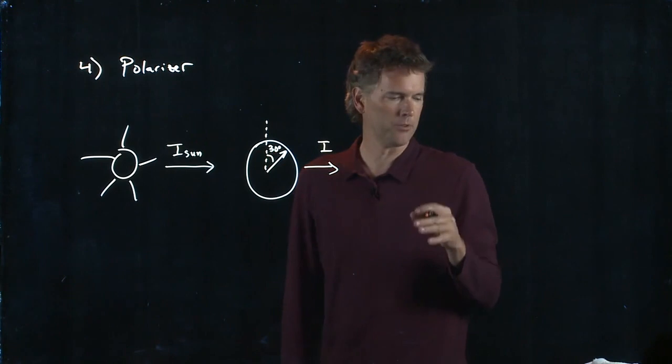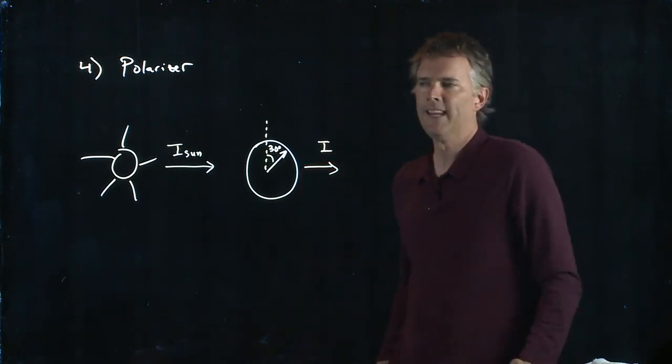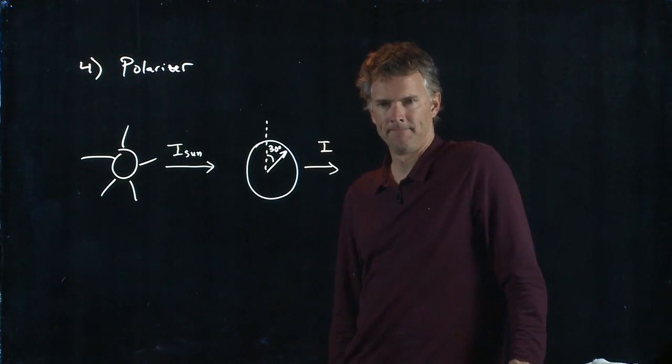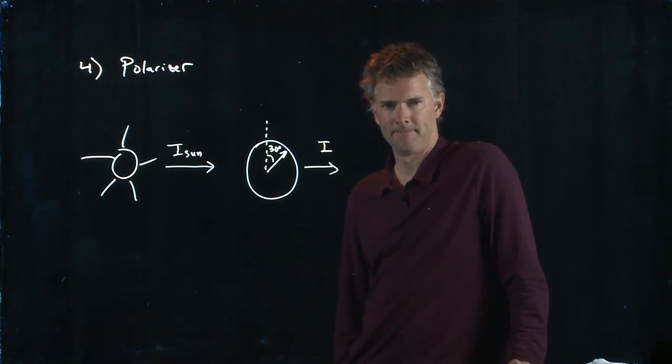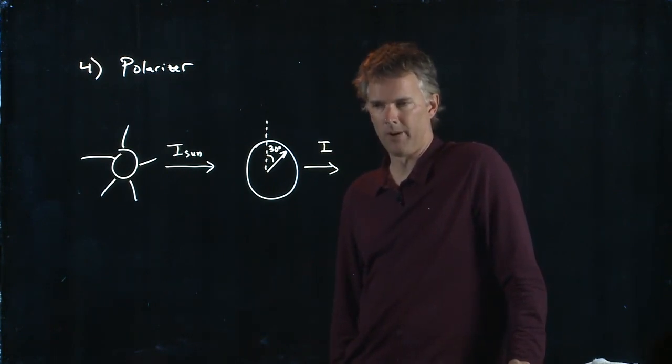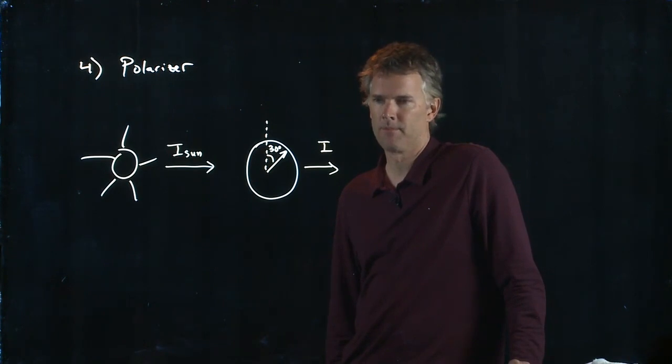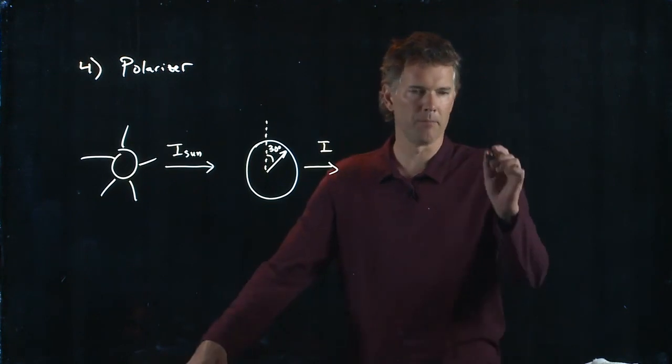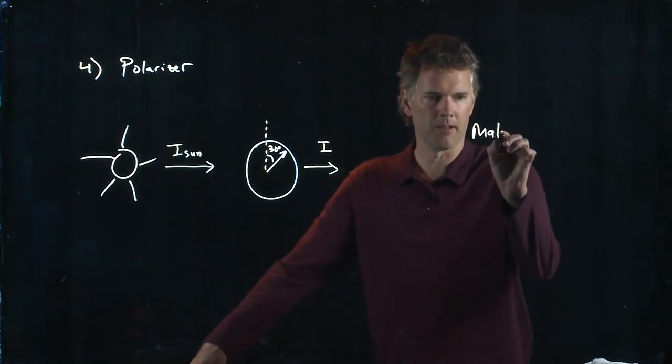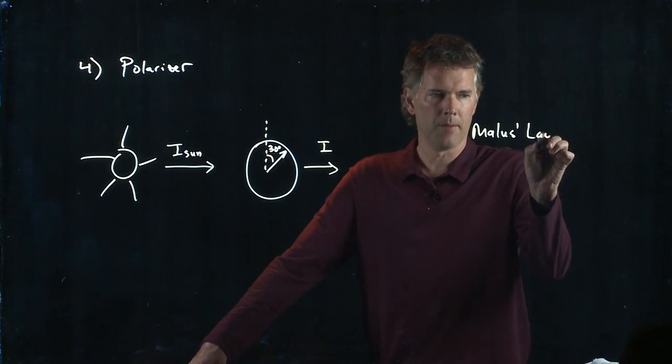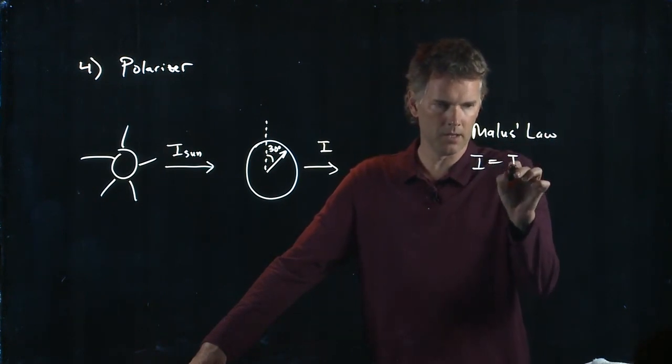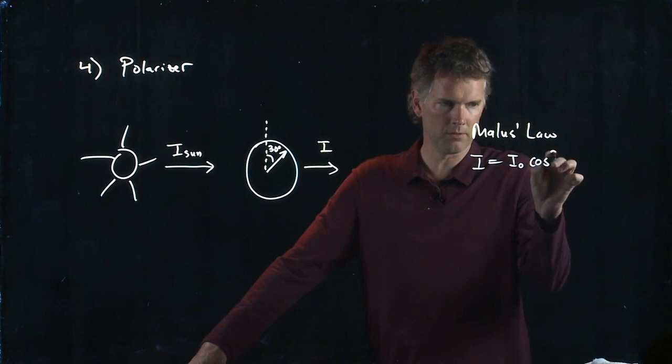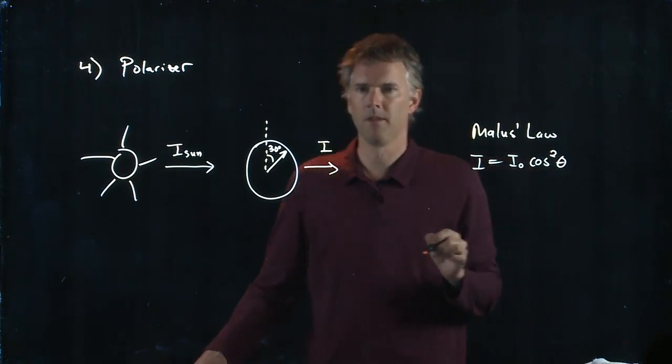So how should I approach this problem? Somebody give me a thought. Eudoria, I see you hiding back there. What should I do for this problem? You can use Malus's Law. Okay. We can maybe use Malus's Law. What is Malus's Law? Let's talk about Malus's Law for a second. Malus's Law says the intensity coming out is I naught cosine squared of theta.